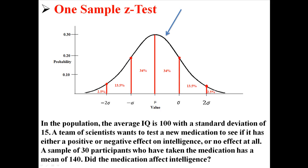Notice where I put the blue area. We would expect the mean of most samples to be pulled towards the center — in this case, it's 100. But imagine if we had something that was way over here. If something is so unlikely to occur by chance, we can conclude that it occurred for a reason. If we calculated something that was so unlikely, we would conclude that our medication had some kind of effect on the sample mean, because it is so different from the population mean that it's incredibly unlikely this would have occurred unless we did something to change it.